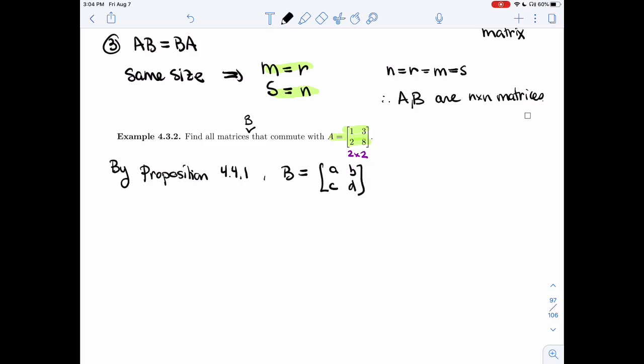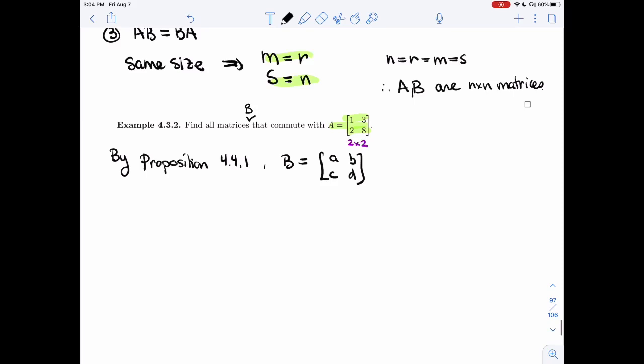Let's call its entries A, B, C, D. Alright, so we want AB to be equal to BA, so AB is 1, 3, 2, 8, times ABCD.